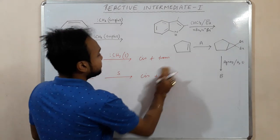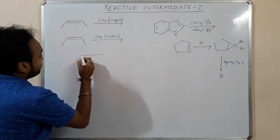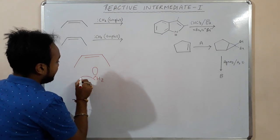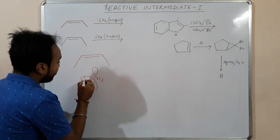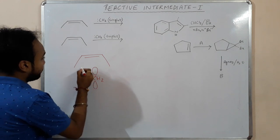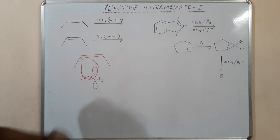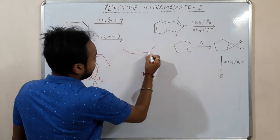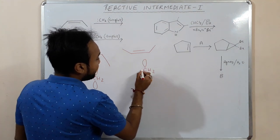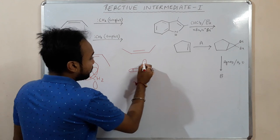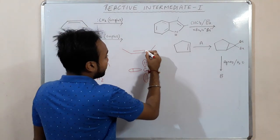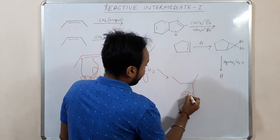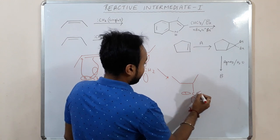Why does this happen? In singlet carbine, both electrons lie in the same orbital, so the reaction is concerted — that leads to cis-to-cis or trans-to-trans products. But in the presence of triplet carbine, the two electrons lie in different orbitals. What happens first is that it forms one bond with one carbon, leaving an unpaired electron on the adjacent carbon.